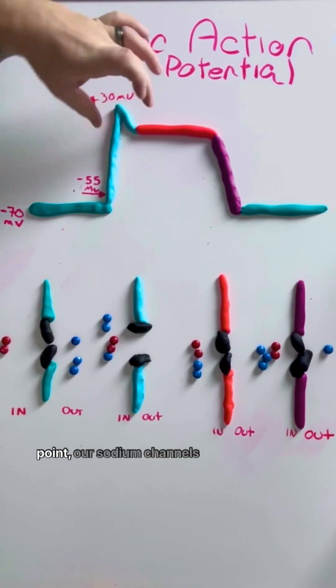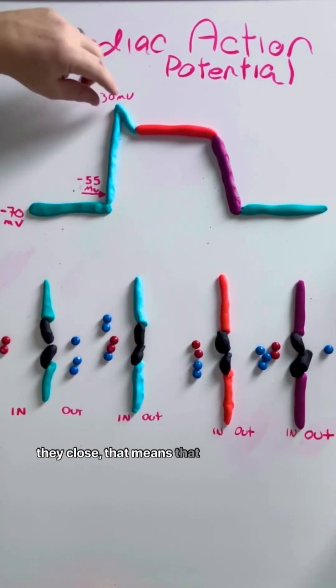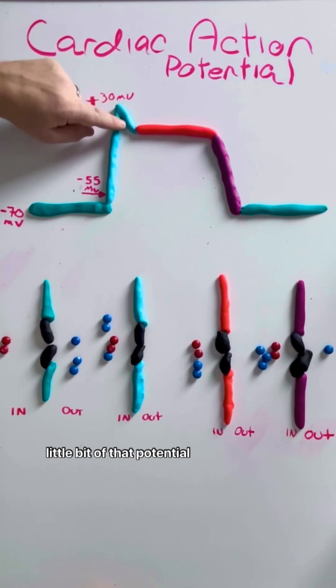Now, once we get to that point, our sodium channels are going to close. And when they close, that means that we're going to kind of lose a little bit of that potential here. You see this little spike and then it kind of starts to peter off.